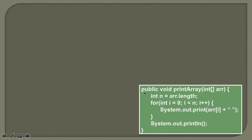Here you can see that we have this public method by name printArray, which takes in an array. To this array, we will iterate its elements one by one using the for loop and will print its content on the console.